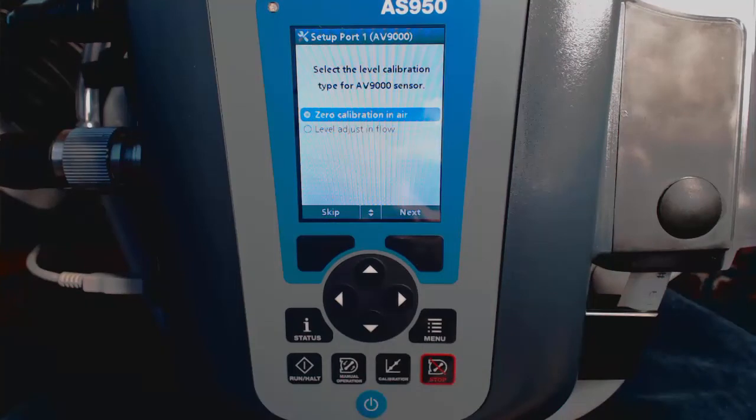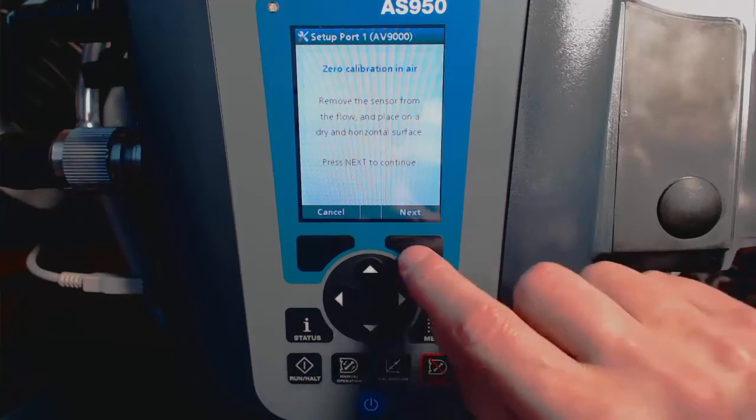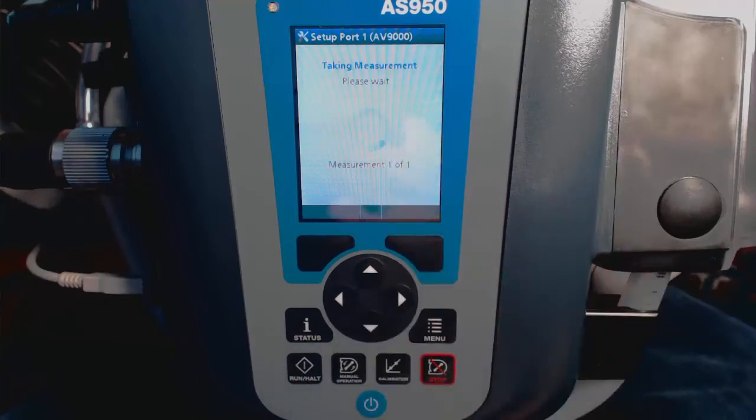Now it's time to calibrate the sensor. We have two choices, to calibrate the sensor in air or in the flow. I've chosen air in this example. Simply follow the on-screen instructions and wait for the calibration to complete. Note this will take anywhere from 30 to 45 seconds to complete.